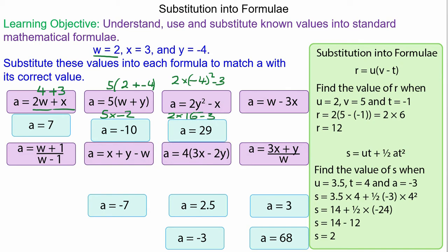Now we've got w minus 3x: 2 minus 3 times 3, which is 2 minus 9, equals negative 7.